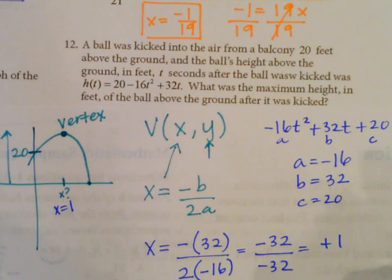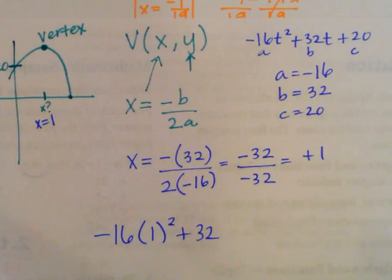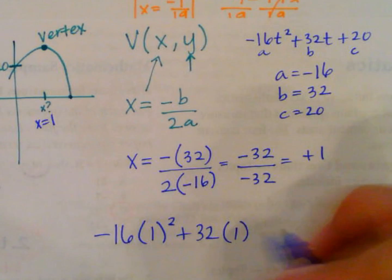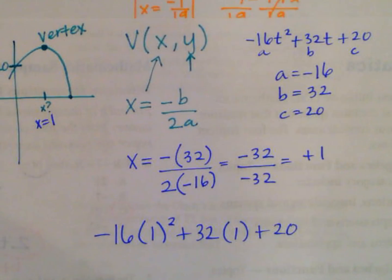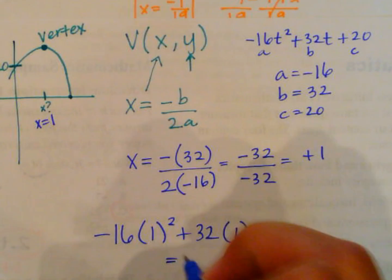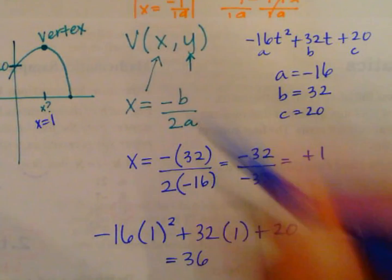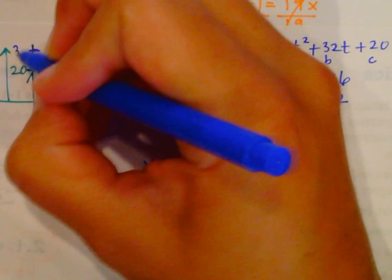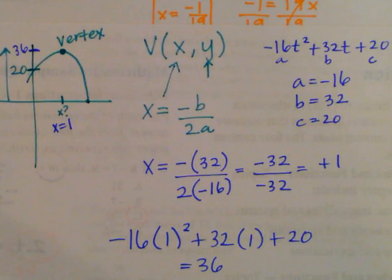If we want to find what that is, we plug it into our equation. So negative 16 times 1 squared plus 32 times 1 plus 20. Let's see what that gives us: negative 16 plus 32 plus 20 equals 36. So that's the height here, 36 at t equals 1 second.